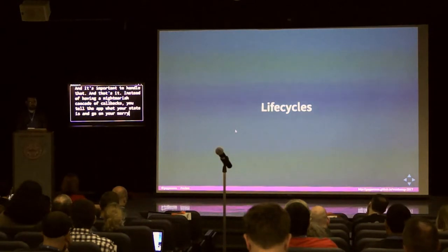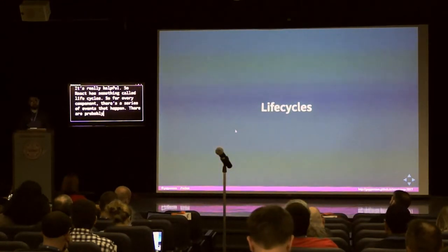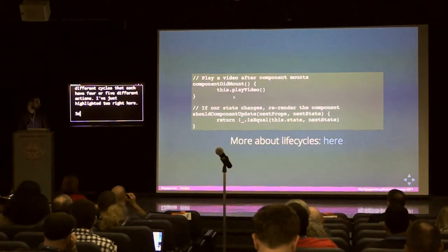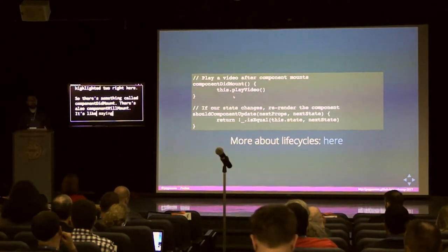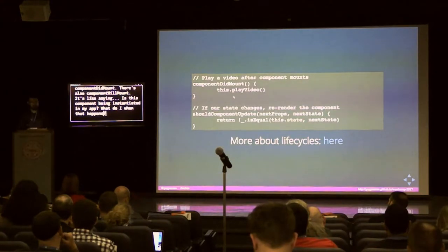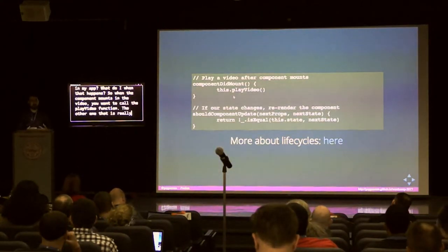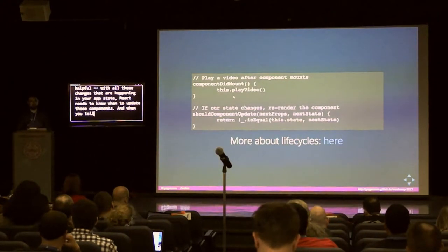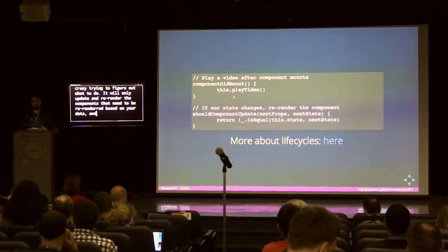React has lifecycle methods. For every component there's a series of events that happen — there are four or five different cycles, each with four or five different actions. There's componentDidMount — basically asking, is this component being instantiated in my app, and what do I do when that happens? For example, when the component mounts for a video, you want to call the play video function. React also needs to know when to update components; if you tell it when to re-render, it won't go crazy and will only update the components that actually need re-rendering.